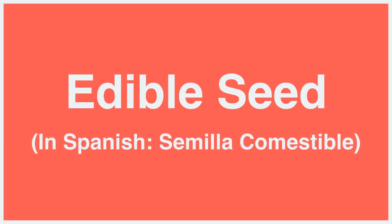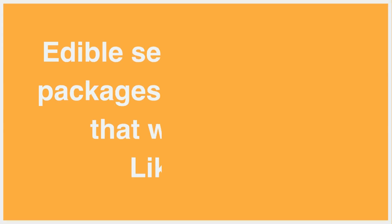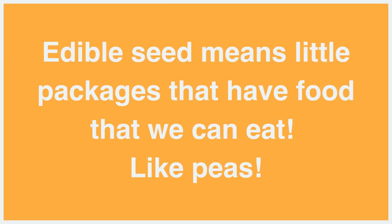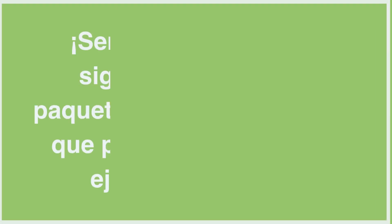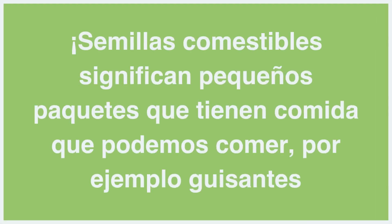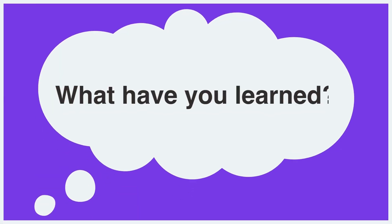In this activity, be sure to introduce the word "edible seed" or, in Spanish, "semilla comestible." Edible seed means little packages that have food that we can eat, like peas. Or the Spanish definition: semillas comestibles significan pequeños paquetes que tienen comida que podemos comer, por ejemplo, guisantes.